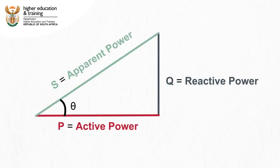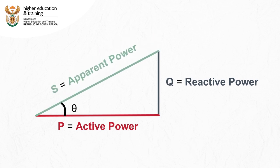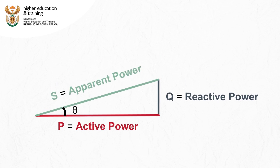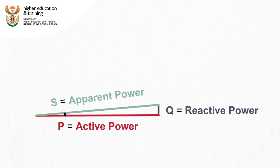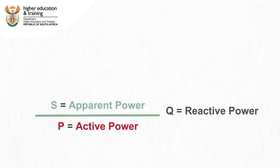The power factor can also be found by calculating the cosine of the angle theta in the power triangle. You can see that the smaller we make theta, the less reactive power there is, and the closer the values of apparent power and active power get to each other.